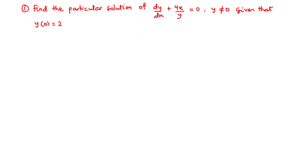In today's video, we are going to learn how to find the particular solution of a differential equation given the initial conditions. Let's start off with our first example. Example 1: find the particular solution of dy/dx plus 4x over y equals 0, where y is not equal to 0, given that the initial condition is y(0) equals 2.